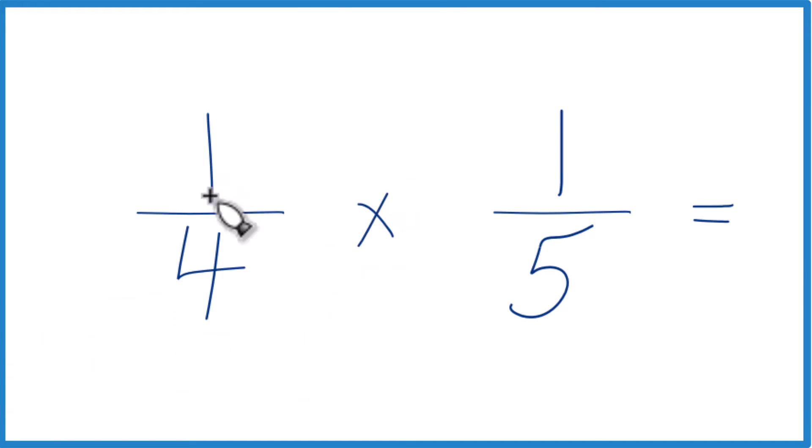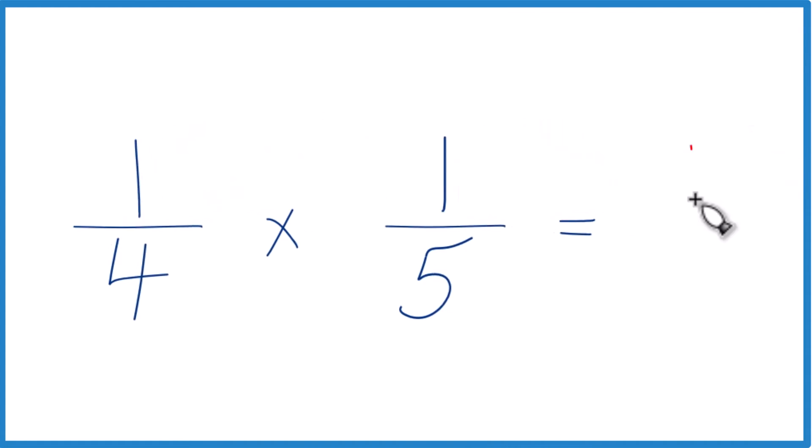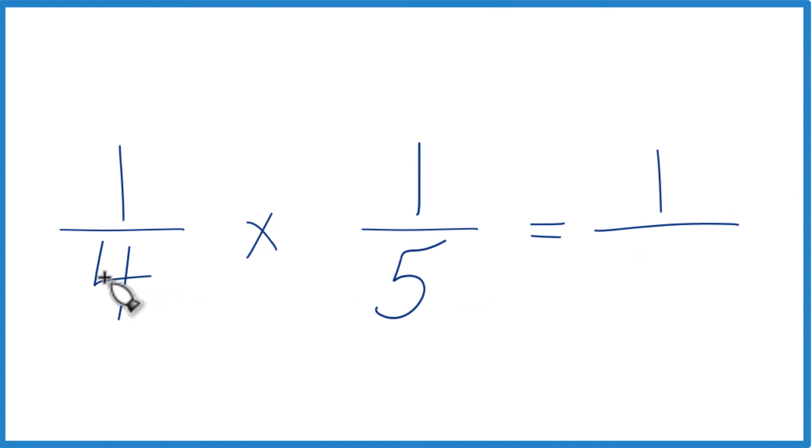Instead of one-fourth of one-fifth, we could call it one-fourth times one-fifth. Now, that's fairly easy. We multiply the numerators, one times one, that's just one, and then we multiply the denominators, four times five, that's 20.